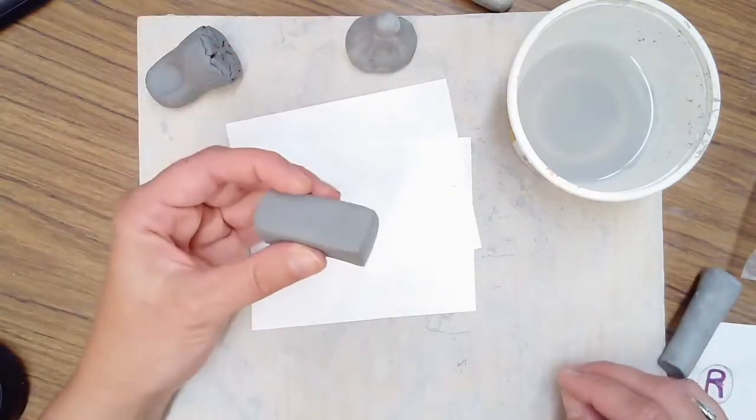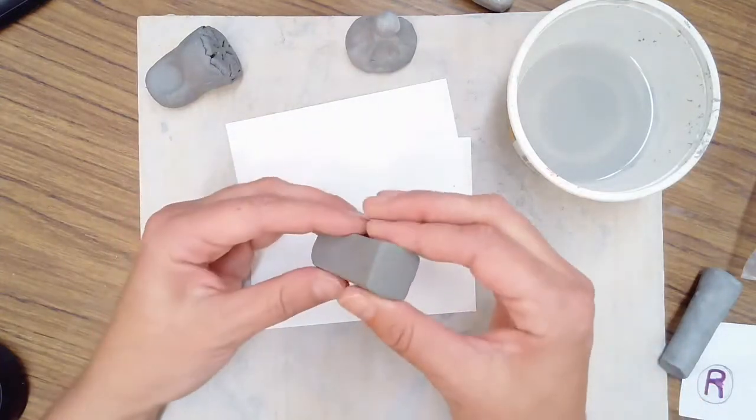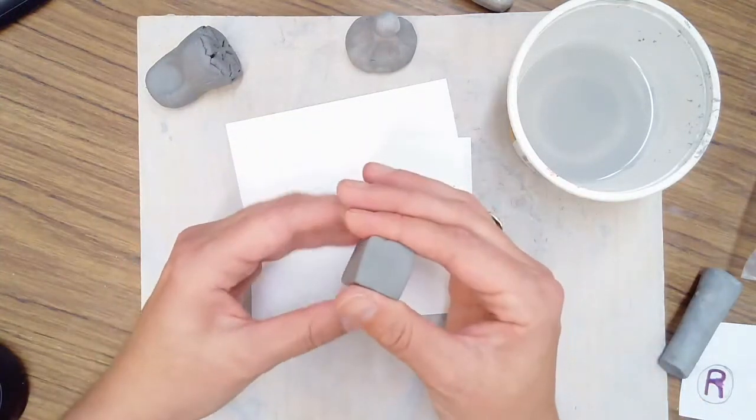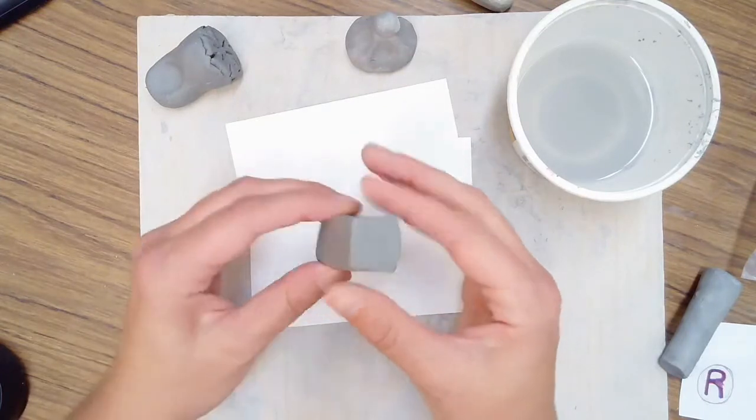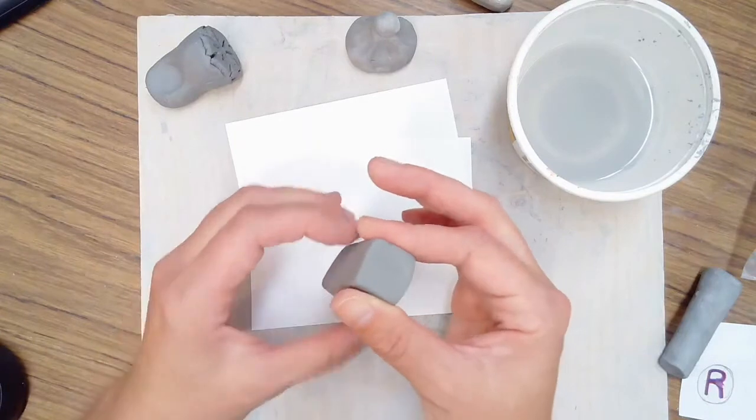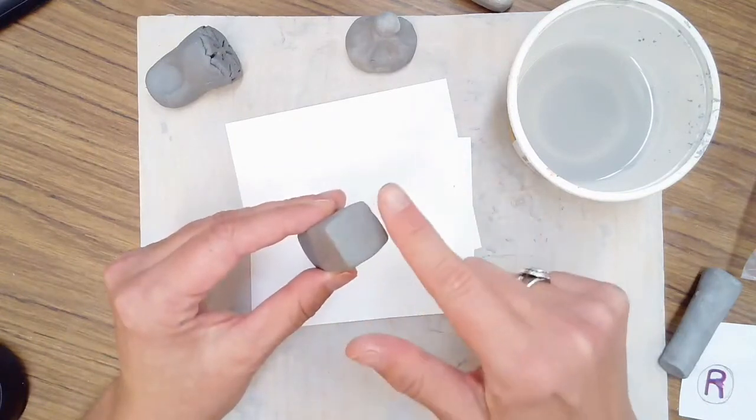It's kind of like a little rectangular prism. And it is not leather hard yet. I could still squish it and shape it, but it's not super wet either. I've left it out for about 20 or 30 minutes. I made sure that this edge is nice and flat.